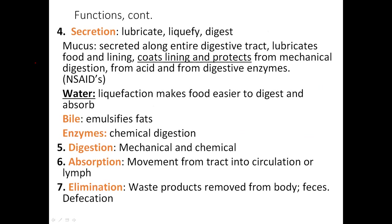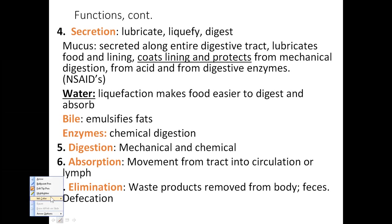The digestive system does a lot of secretions, and its job is to lubricate, liquefy, and digest. It is very important to have a mucosal lining because it protects the sensitive tissue that food passes through. If you damage the mucus lining, you are going to get ulcers — that is one of the side effects of mucosal lining problems.